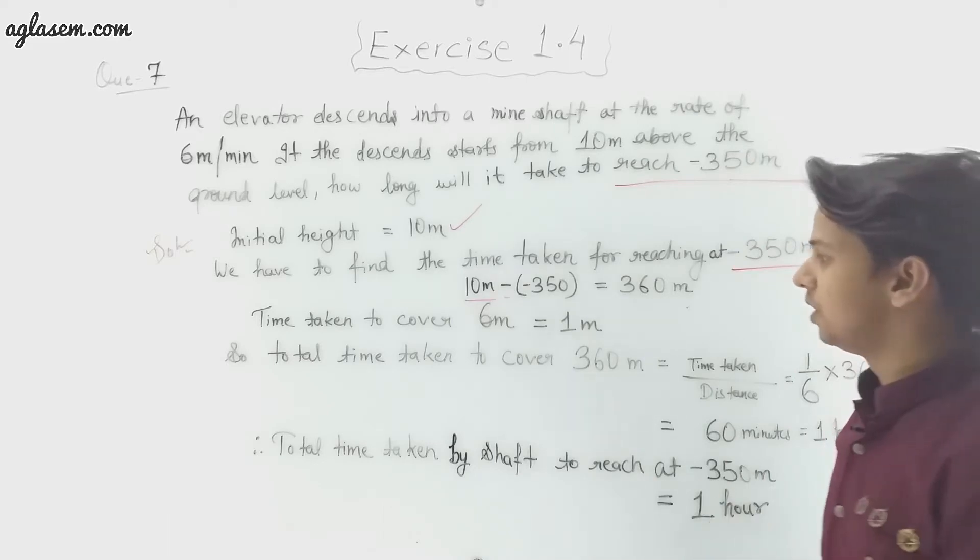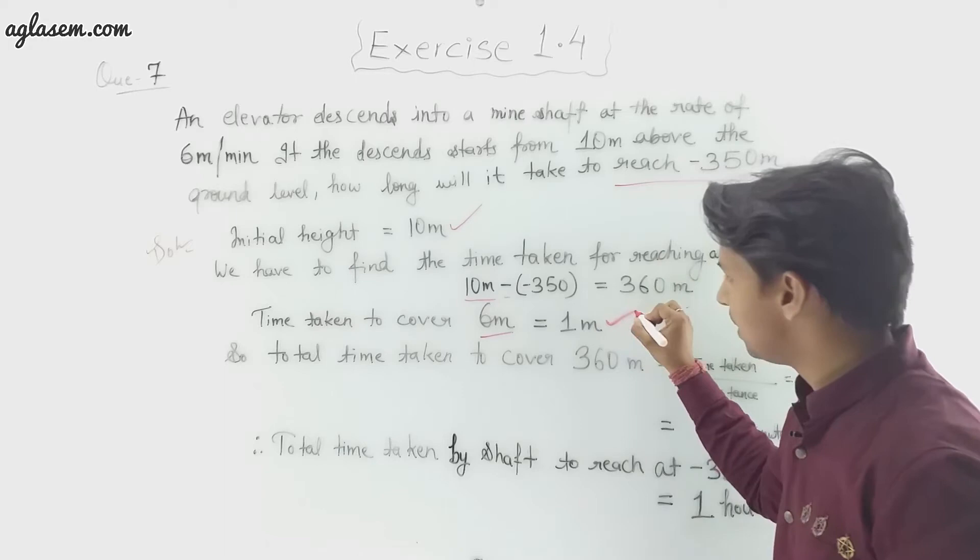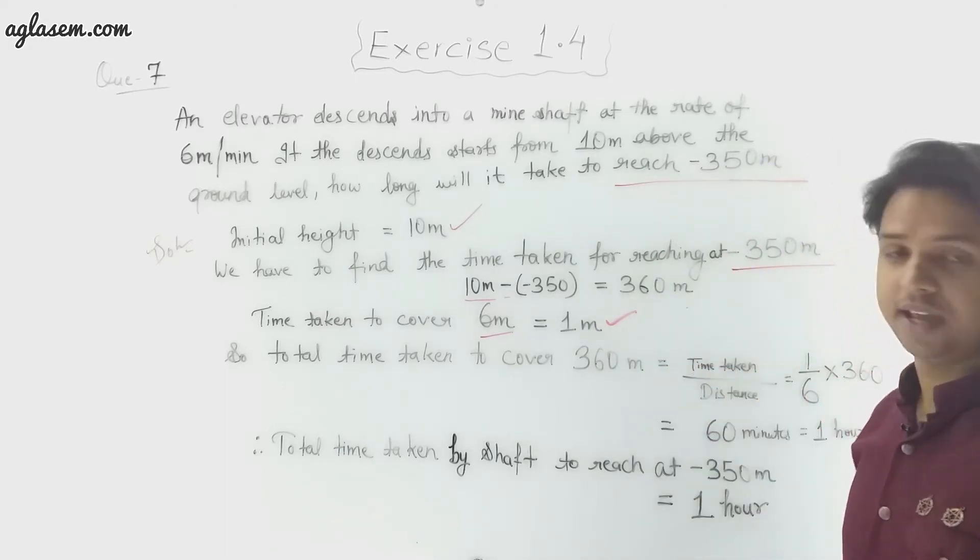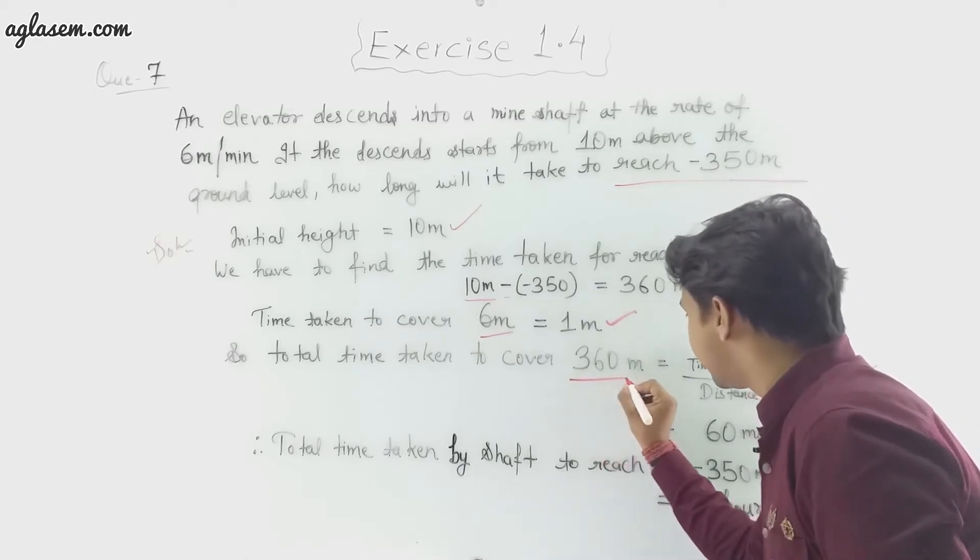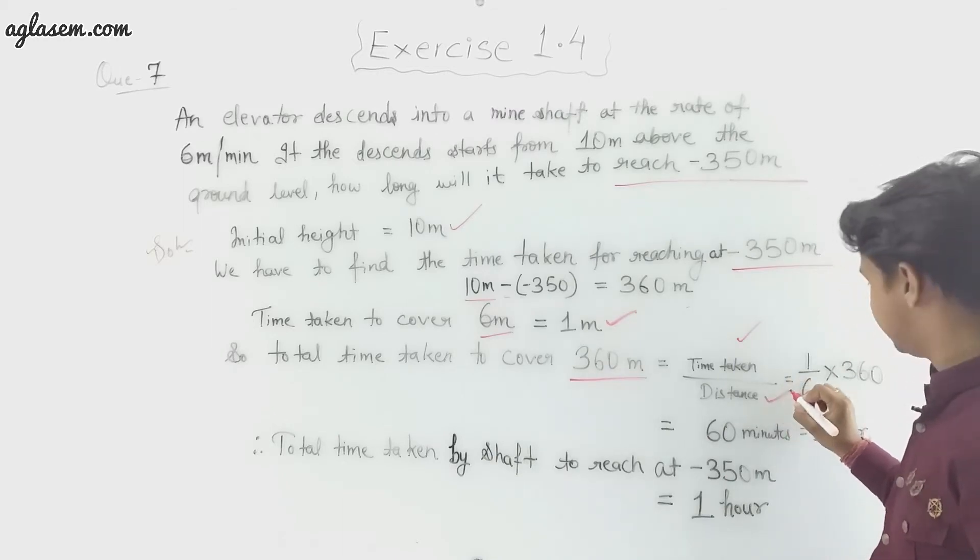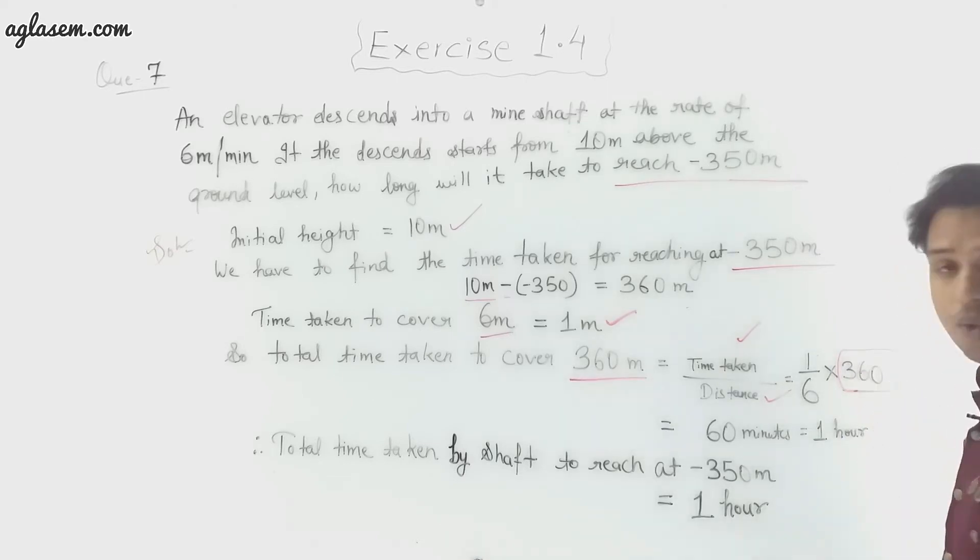Time taken to cover 6 meters equals 1 minute, mentioned in the question. So we have to find the total time taken to cover 360 meters. We have to solve: time taken upon distance, that is 1/6 × 360. So 360 ÷ 6 = 60.